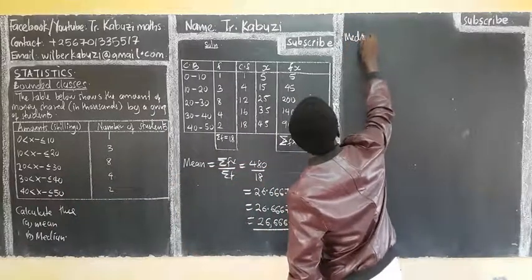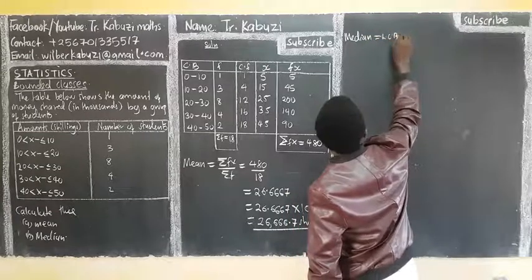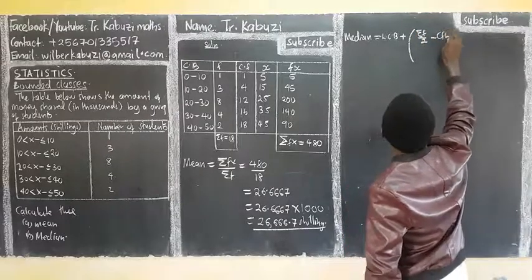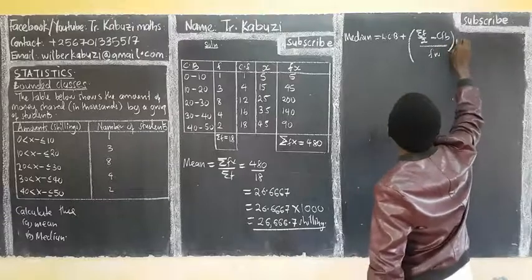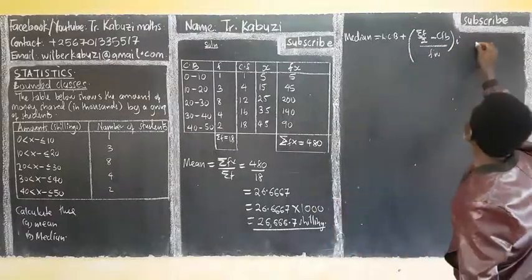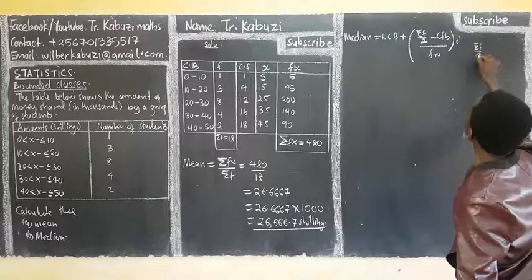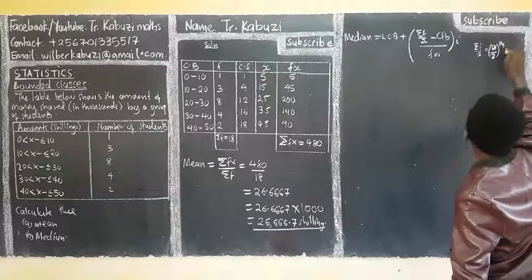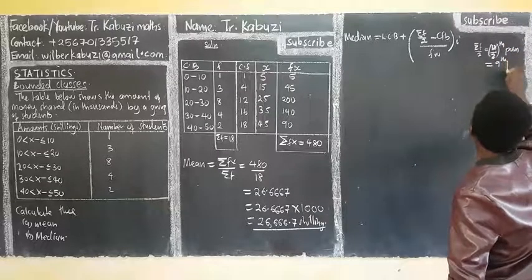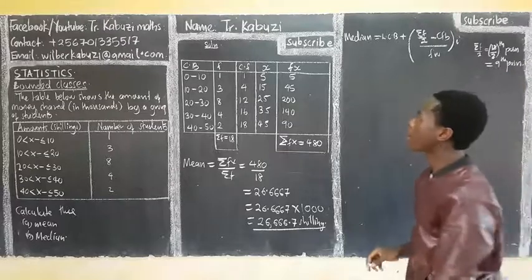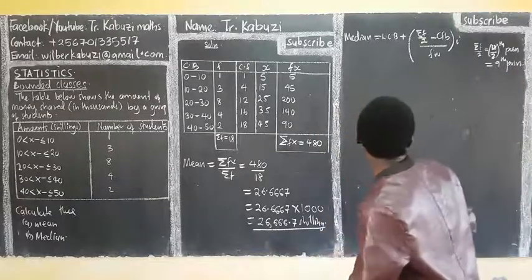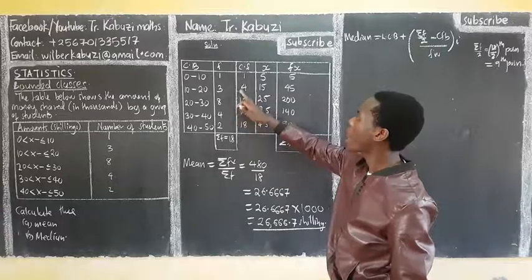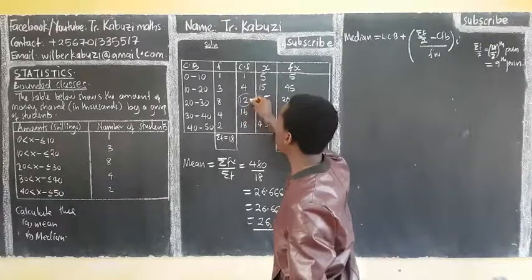Our median, the formula for the median is given by lower class boundary plus summation f over two. We need this position value. This position, which will be nine, the position. After getting that, now you come in our frequency.